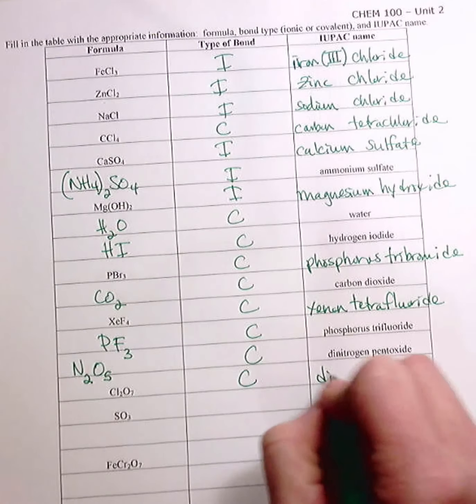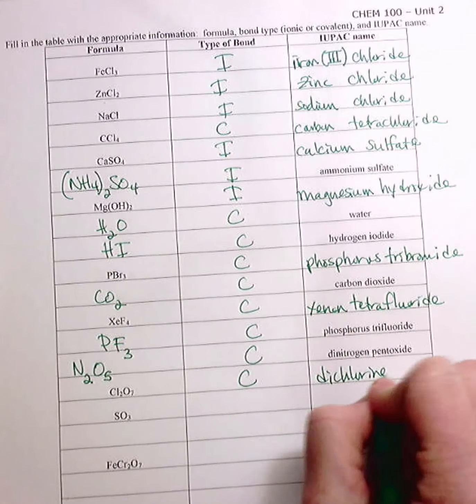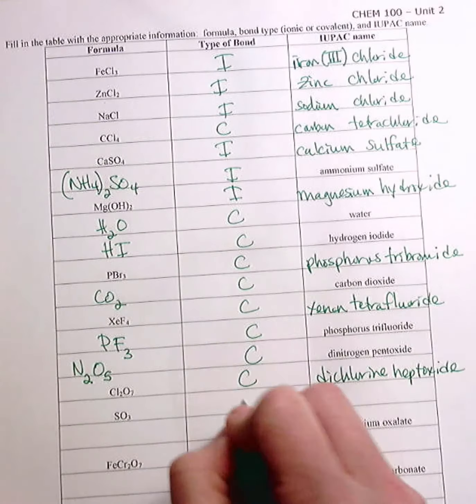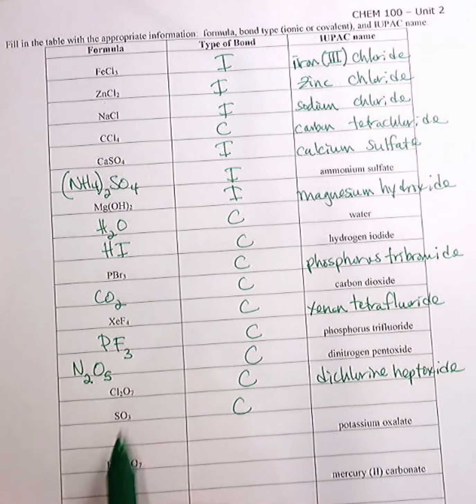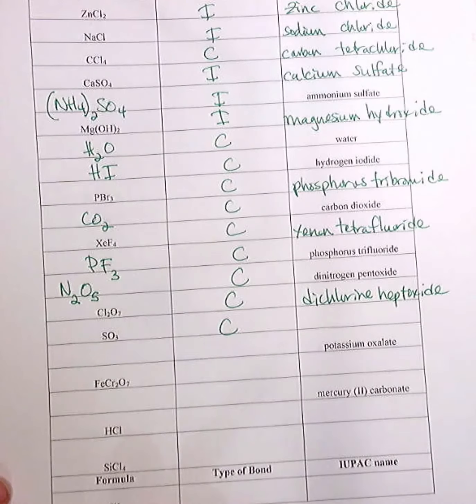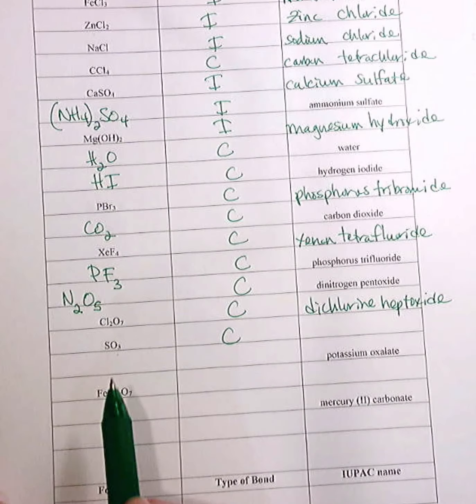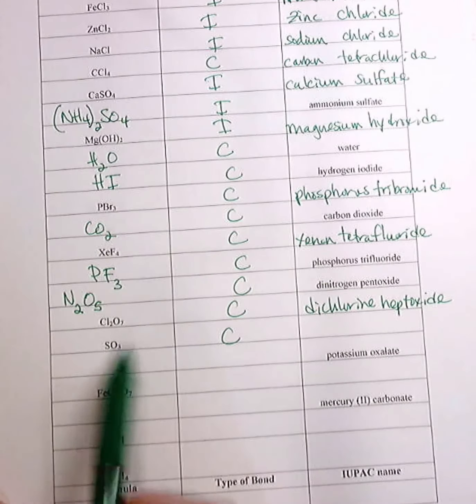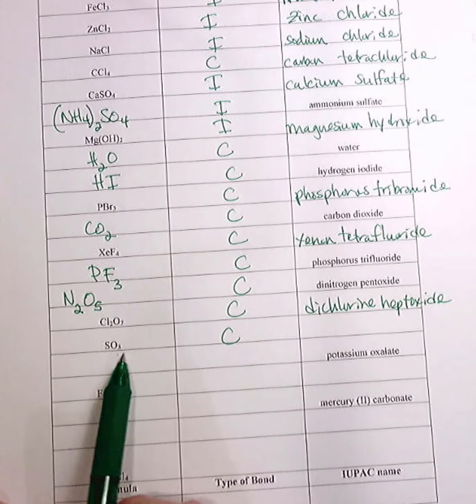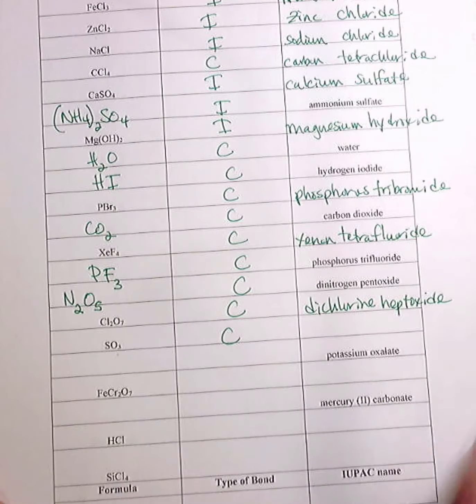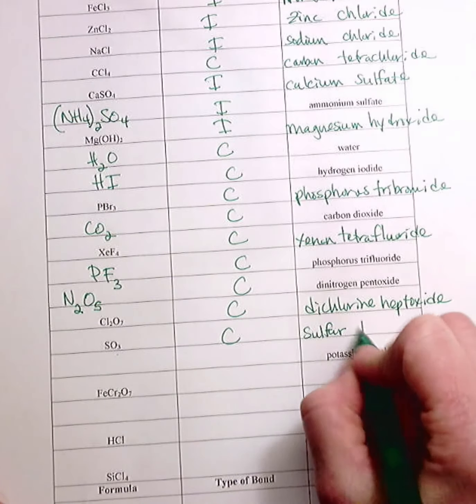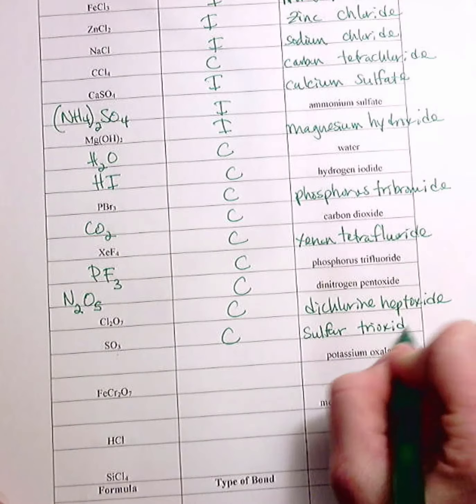Next one. Covalent. Dichlorine heptoxide. Next one. Covalent. Note. A lot of times students will say, this is sulfate ion. I know it is, Professor Clark. You were wrong. It is not sulfate ion. Sulfite, sorry. Sulfite ion written like this because it has no charge. So this is sulfur trioxide.